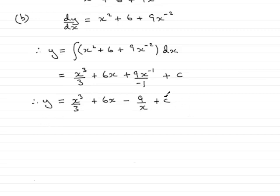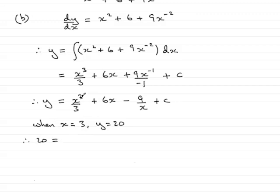All I need to do now is work out my constant of integration. I know the curve passes through the point (3, 20), so when x = 3, y = 20. Substituting in: 20 = 3³/3 + 6(3) − 9/3 + c. That gives 20 = 9 + 18 − 3 + c, so 20 = 24 + c. Taking 24 from both sides gives c = −4.